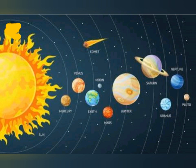The planets away from the sun are the outer planets of our solar system. These are Jupiter, Saturn, Uranus, Neptune, and Pluto. Pluto is a dwarf planet.